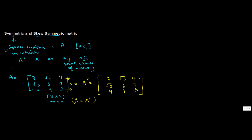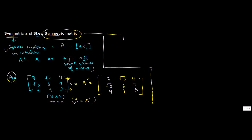Now in the case of a skew symmetric matrix, again the matrix has to be a square matrix first. In this case, the transpose of A is equal to minus A, which means that all aij values are equal to minus aji values.